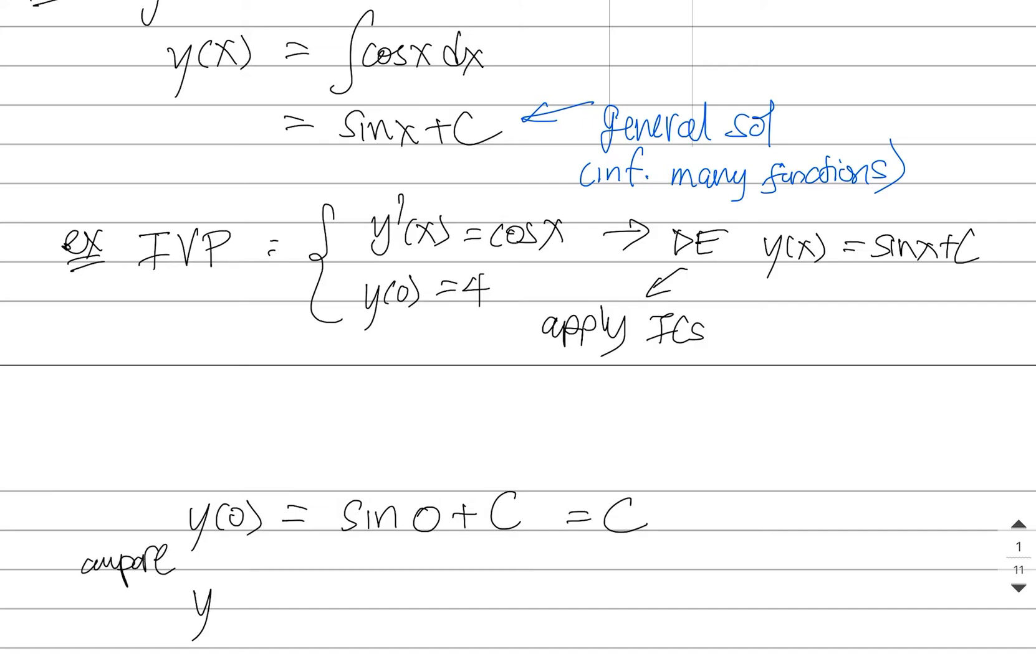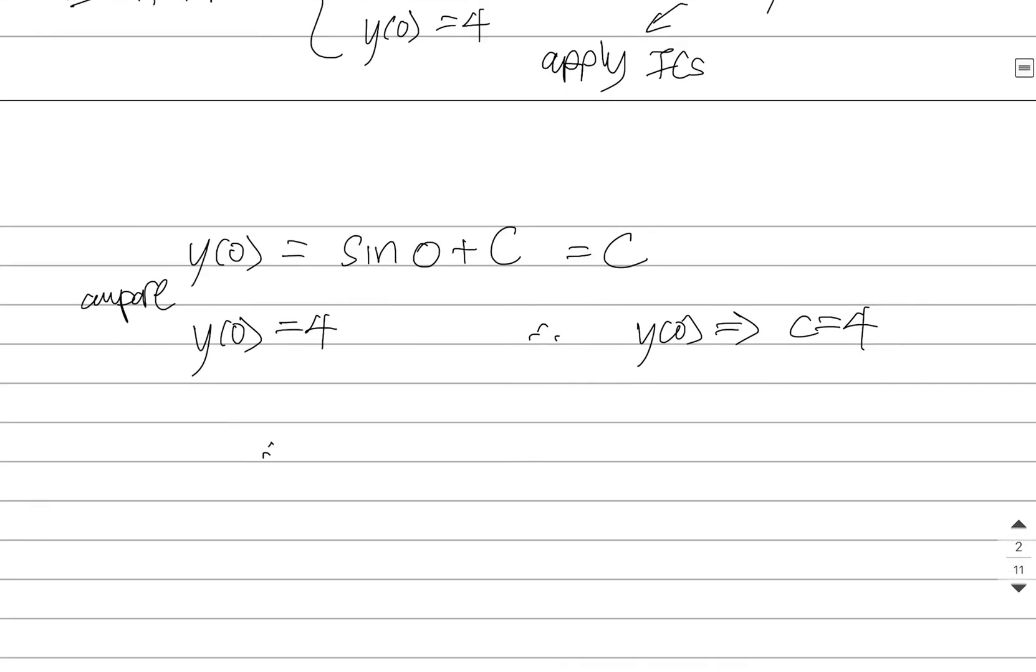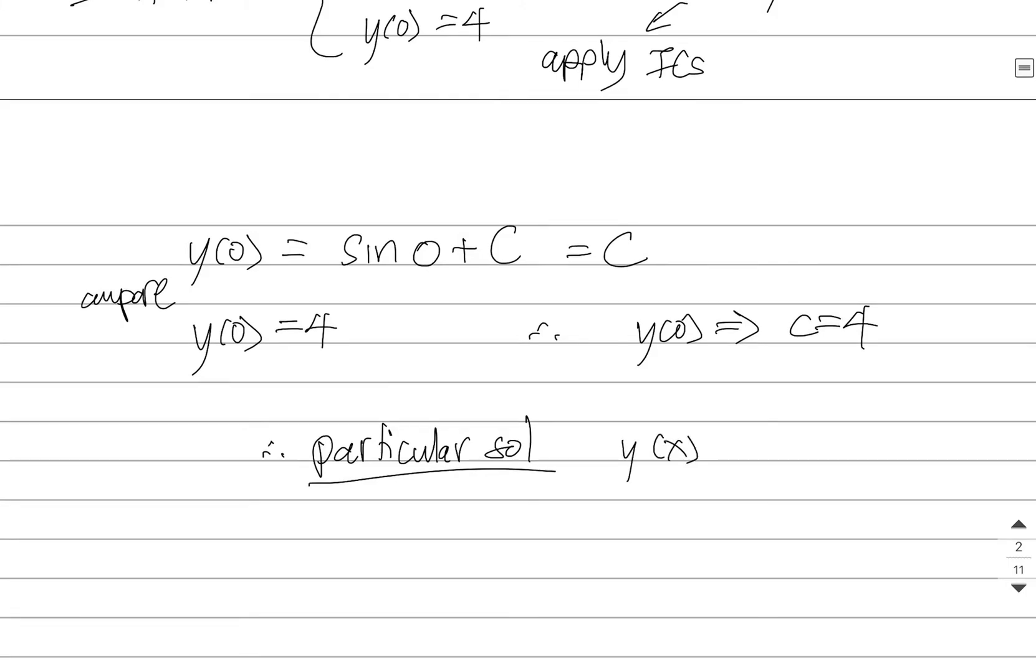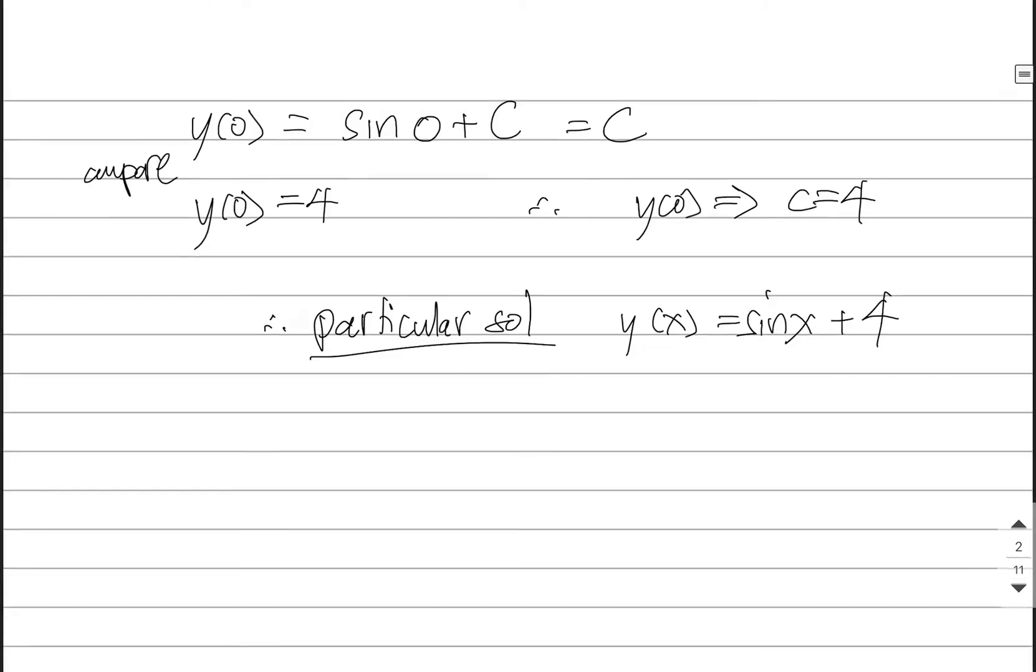You're going to compare this to the initial conditions that you've been given, and what that's going to tell you is that C has to be 4. And so then what you get is what's called a particular solution. This is the one and only one answer to your initial value problem. It has the function-y part that satisfies the differential equation, plus this constant that will satisfy the initial condition.